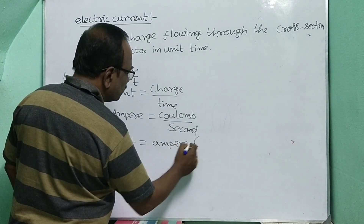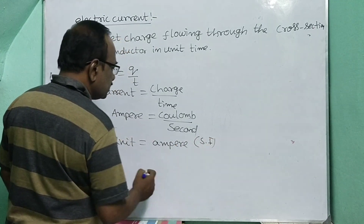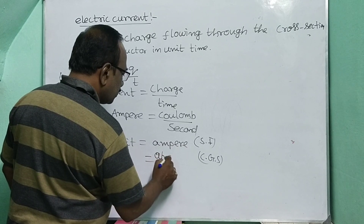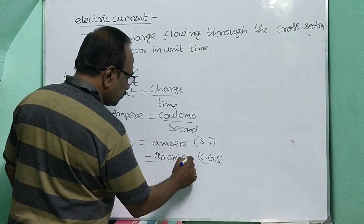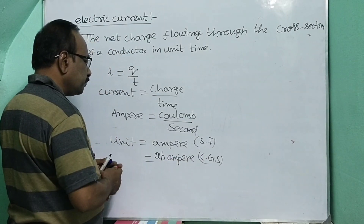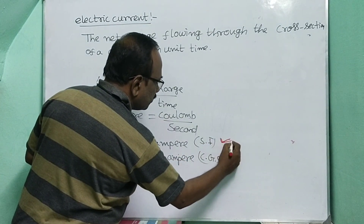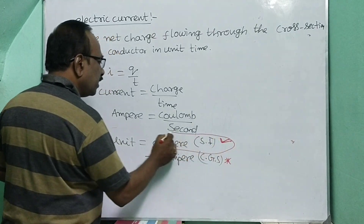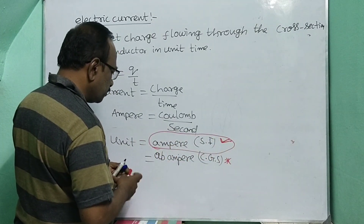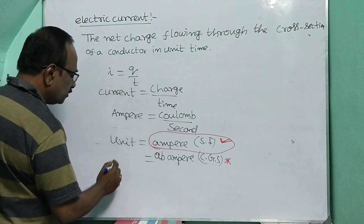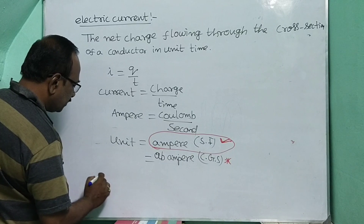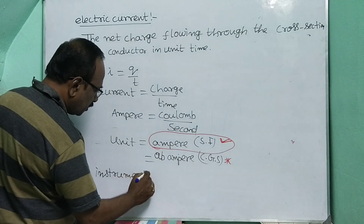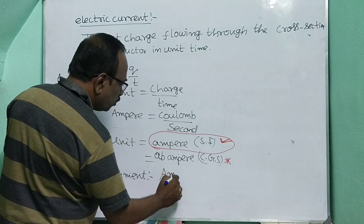These are the most important units. We always use ampere. If specifically asked, you must write the SI unit as ampere (A). Generally, ampere is the unit we always use in examinations and formulas. To measure current, we use an instrument called an ammeter. The ammeter is the most important instrument for measuring current.